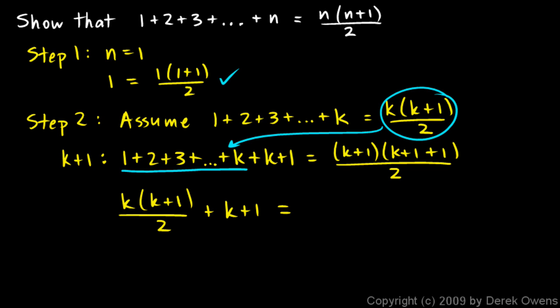Plus k plus 1 equals, and on the right side, I'm going to work this out. This is k plus 1 times k plus 2, and let's do a FOIL on that, which gives us k squared plus 3k plus 2, all over 2.